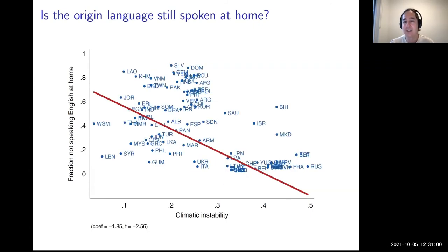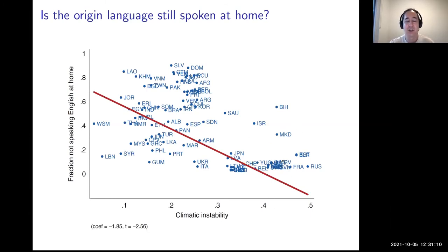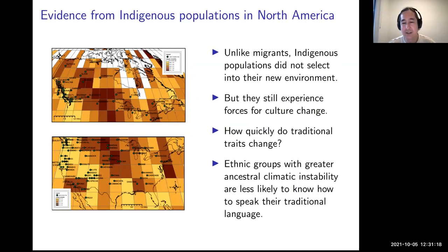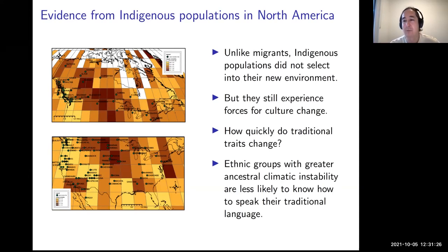We see the same pattern for language: people from backgrounds with ancestors in more stable environments are more likely to continue speaking their traditional language at home. One concern is that immigrants are a selected sample — those who migrate may already be more open to new environments.